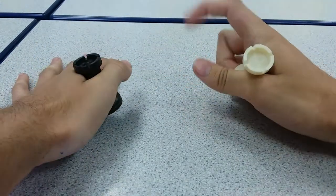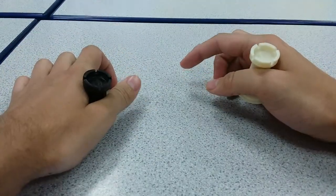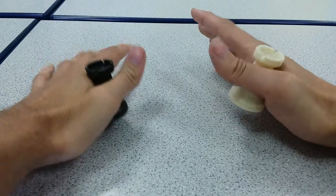grab this one between your thumb and forefinger and this one between your thumb and forefinger with the other hand and separate them. It's a party trick.